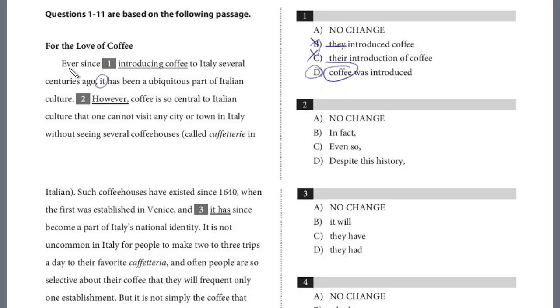Let's take a look and read it now. Ever since coffee was introduced to Italy several centuries ago, it, the coffee, has been a ubiquitous part of Italian culture. Ubiquitous, by the way, means very prevalent, it's everywhere, all around.